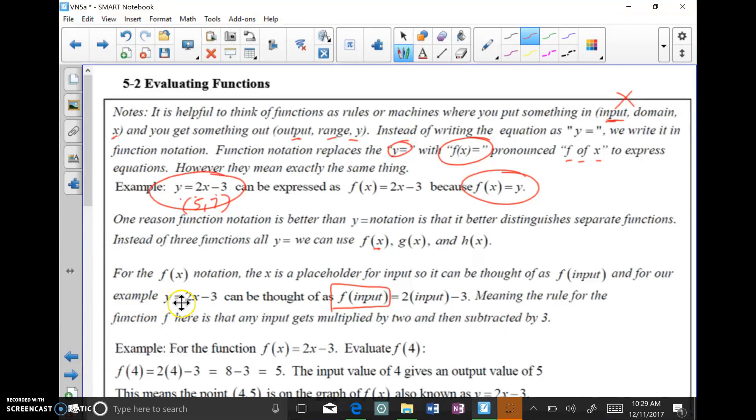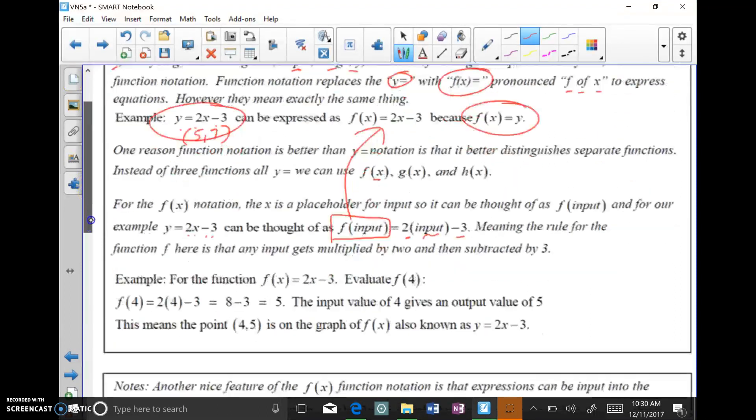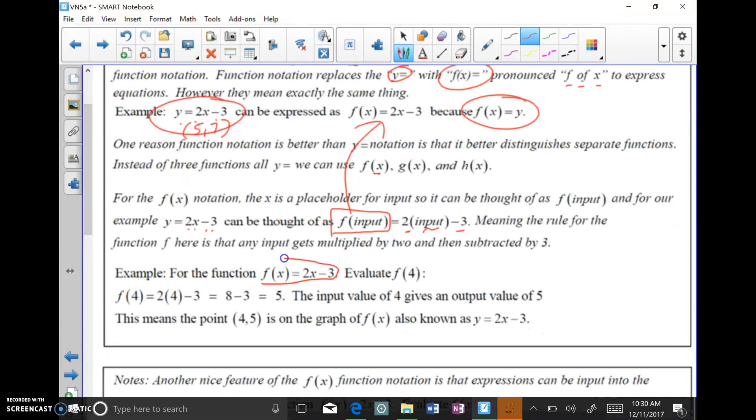And the reason why we change up the notation is because now we can think of this as your input. That f of x, you could think of as f of input because x is your domain, x is your input. And so instead of 2x minus 3, you could think of it as 2 times your input minus 3 because x is input. This is really just using that f of x is f of input and 2x is 2 times your input minus 3. So whatever I put in, it goes in there.